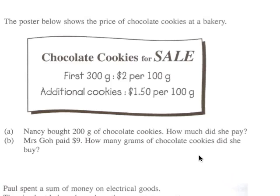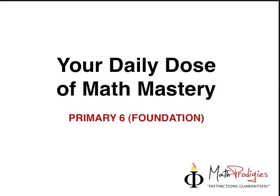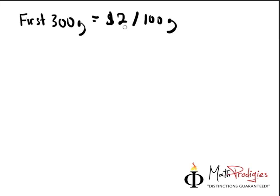what we must do is you must make sure that we just take a look at $2 per 100 grams. So for 200 grams, how much will she pay? It's very simple. So I'm going to make sure that I actually write this down for you. So first 300, that means if I were you, I would write your first 300 grams, I would write it as this,